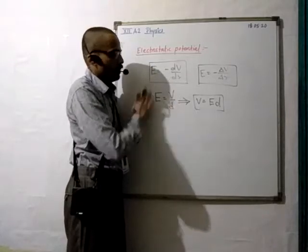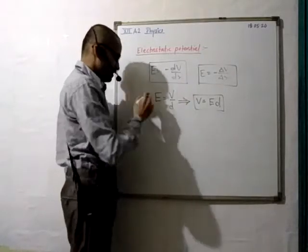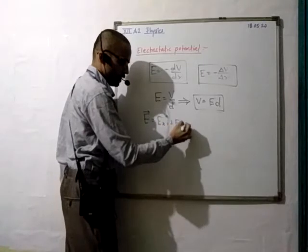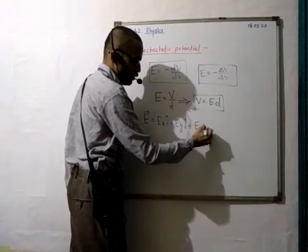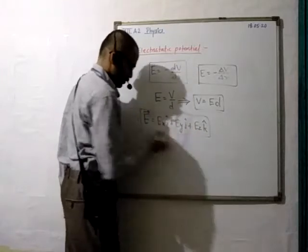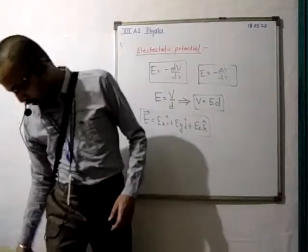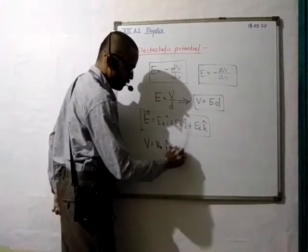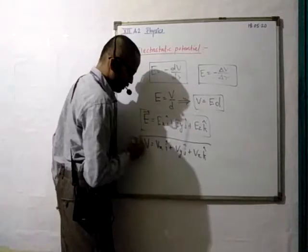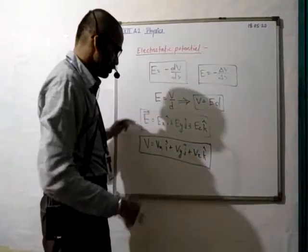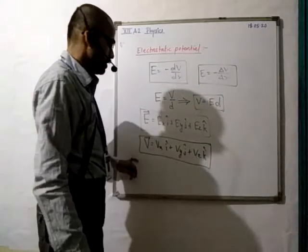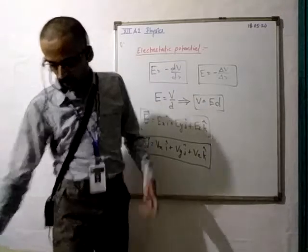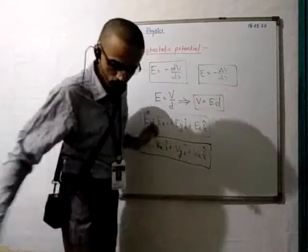Regarding potential and electric field — if you have that, E can be written in general as E_x·i-cap plus E_y·j-cap plus E_z·k-cap. This is the general formula for electric field. For V, you are not supposed to do that vector form. For E you will require it, but for V we will not write it that way.